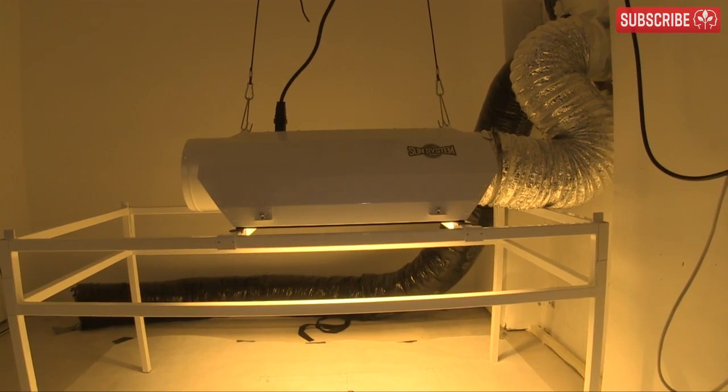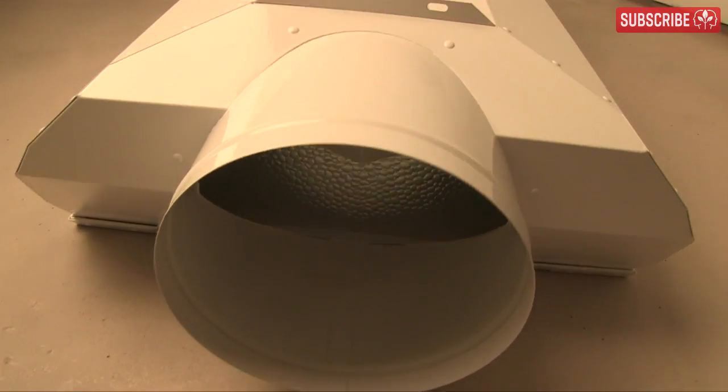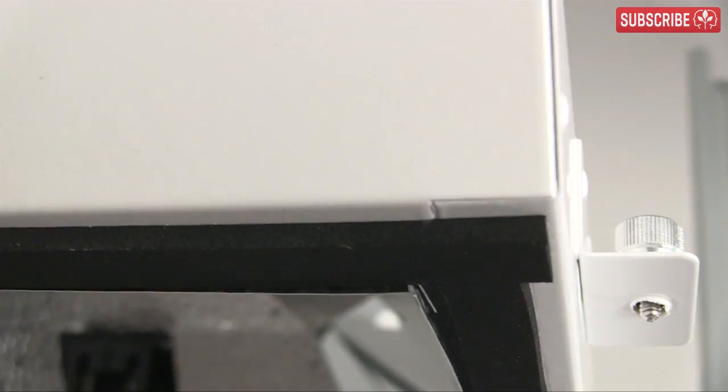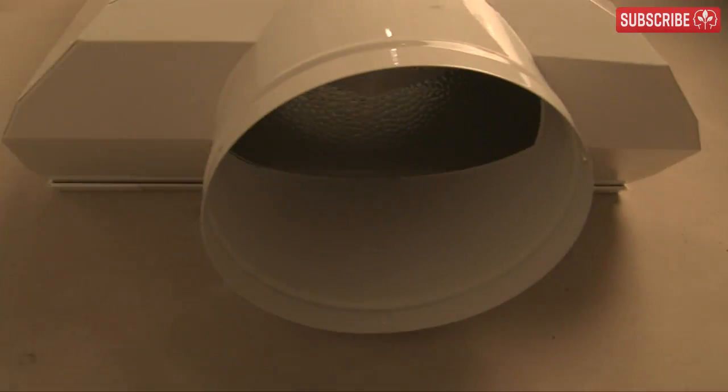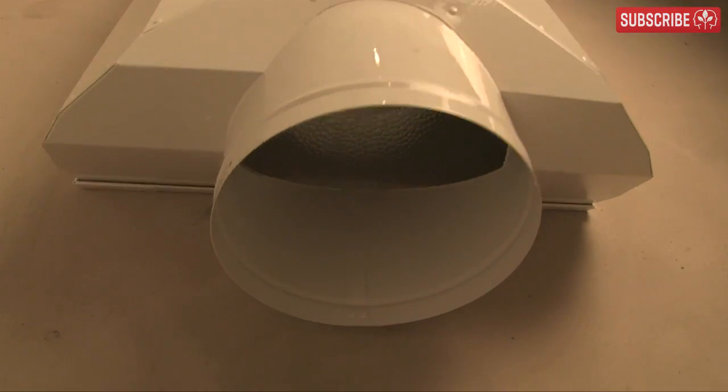The SunSystem ACDE reflector is unique, as far as I know, in that it's possible to vent the reflector with or without the glass. This is because the cooling chamber is actually above the lamp, so it removes convection heat rather than passing air directly over the lamp itself.